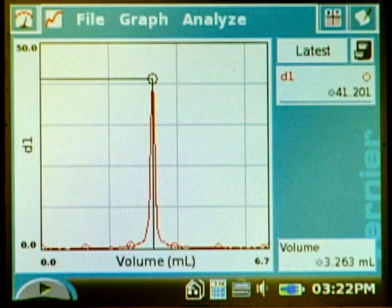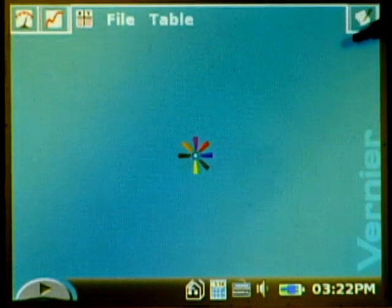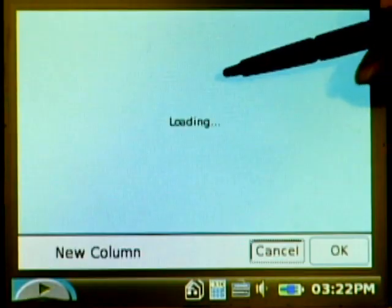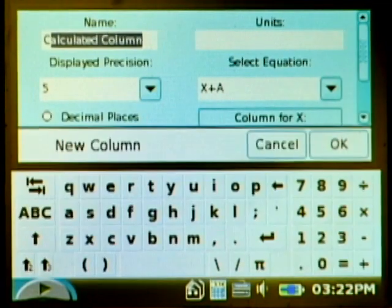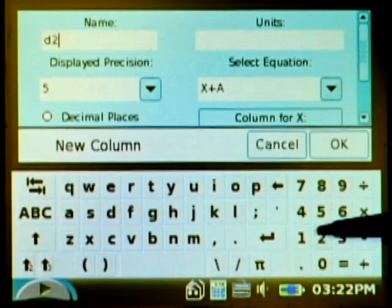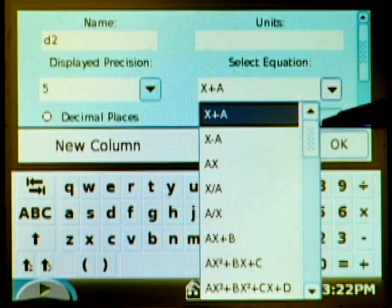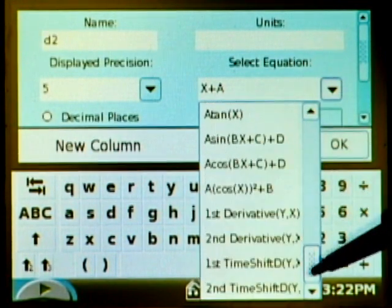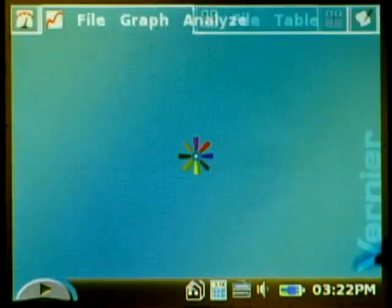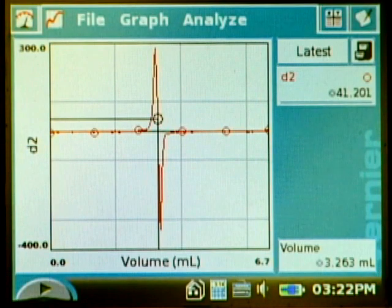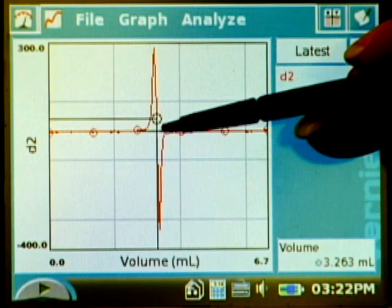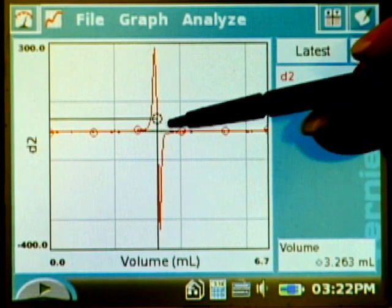Another way is the second derivative. I'll go ahead and create that column too. Under table, new calculated column, we'll name this one D2 and the equation second derivative of Y with respect to X. Okay, here we have the second derivative and what we really want to see is the point where this line crosses zero.